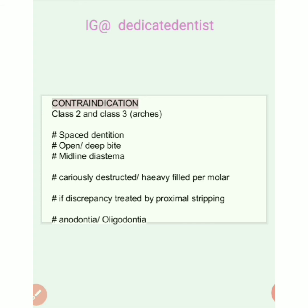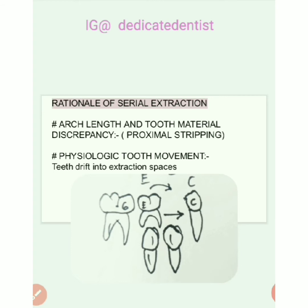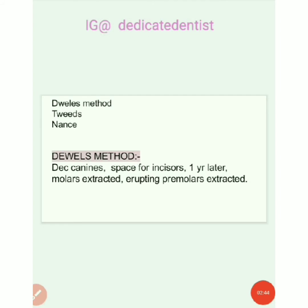The rationale for serial extraction: if the arch length and tooth material discrepancy is very small, it can be treated by proximal stripping and we don't go for serial extraction. Regarding physiologic tooth movement, teeth have a natural tendency to move into extraction spaces, drifting more mesially than distally, so we don't have to move teeth artificially — they make use of physiologic forces. Serial extraction is carried out in the early mixed dentition period and includes planned extraction of certain deciduous teeth and later specific permanent teeth in an orderly, predetermined sequence to guide erupting permanent teeth into a favorable position.